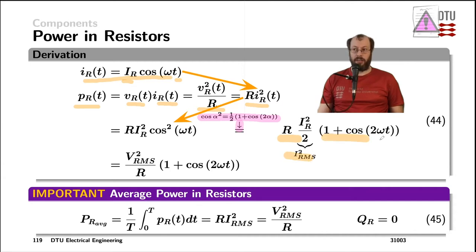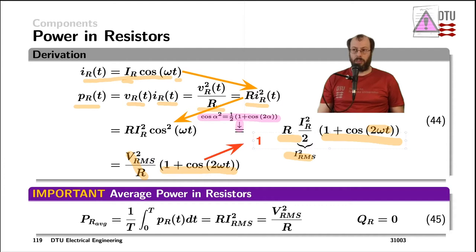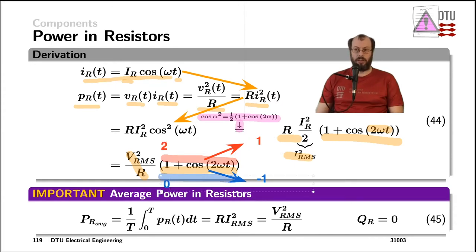And in the brackets, we have the cosinusoidal waveform of twice the original frequency of the current applied as a test current through the resistor, or rewriting it with the voltage, we have the RMS voltage squared divided by the resistor times the same cosinusoidal waveform with an offset of one. The maximum of cosine is one and the minimum is minus one, so together with the offset of one, the expression in the brackets reaches its maximum at two and its minimum at zero.